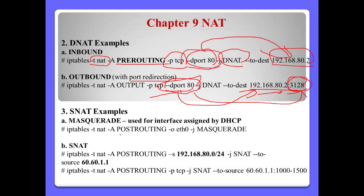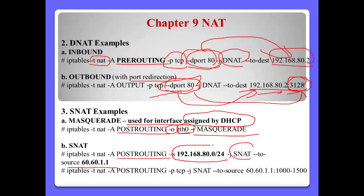Number 3: Source NAT example — masquerade. We use masquerade when the interface is assigned by DHCP. For example: iptables -t nat POSTROUTING, interface ETH0, then masquerade. Source NAT: table NAT, POSTROUTING, source address 192.168.0/24, and SNAT to source 60.60.1.1. This means our internal network with private address 192.168.0/24 — if the client wants to connect to the internet, all addresses will be changed to 60.60.1.1, our public IP address.